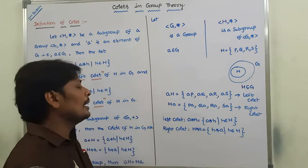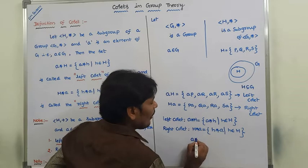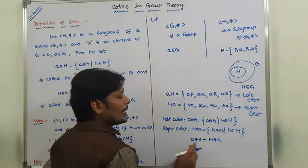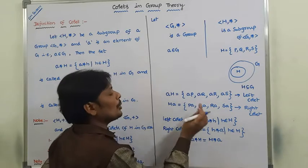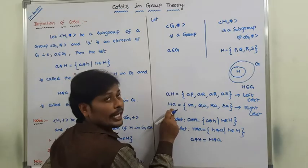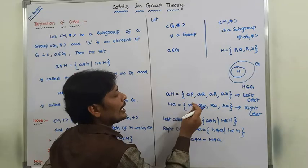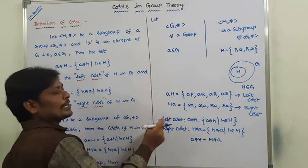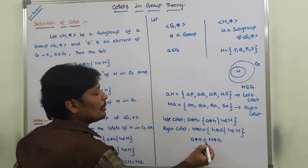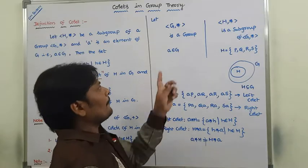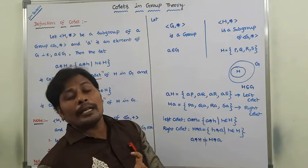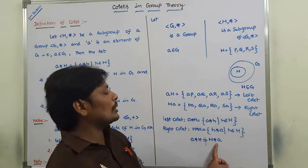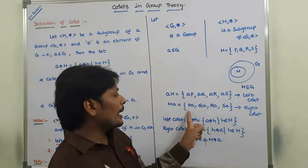Now we have to verify whether left coset equals right coset or not. A·H is the left coset and H·A is the right coset. Is A·H equal to H·A? We can observe that in A·H we have ap, and in H·A we have pa. Is ap equal to pa? No — because it is a left coset versus a right coset. Left coset is not equal to right coset. If G comma star is a group, then left coset is not equal to right coset, that is A·H ≠ H·A, that is ap ≠ pa.